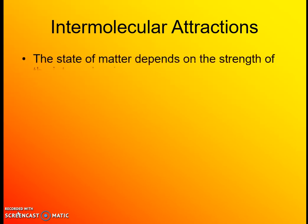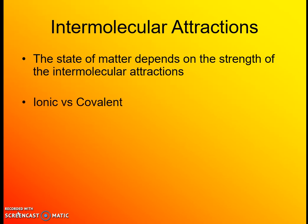Intermolecular attractions have a large effect on certain properties — particularly how easily molecules are pulled apart or held together, resulting in different melting and boiling points. Ionic compounds are solids at room temperature with very high melting points because of how strongly they are attracted to each other. Getting those particles to move freely requires pulling apart all those positive and negative charges, requiring a lot of energy and a very high temperature.